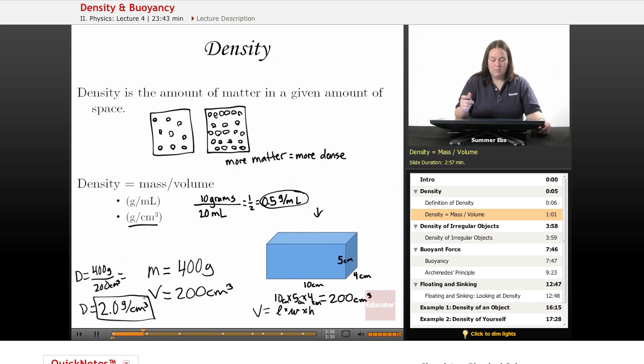A gram per centimeter cubed really is the same as a gram per milliliter. It just depends on what you're measuring. A solid, regularly shaped object, it's easy to measure in centimeters cubed.